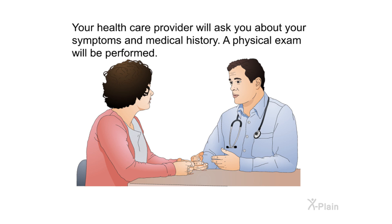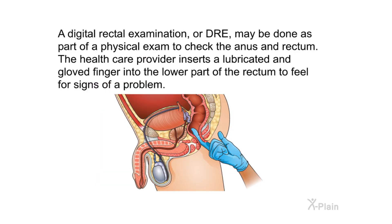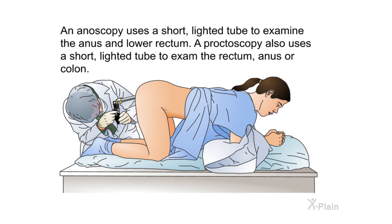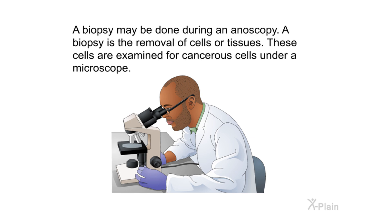Your health care provider will ask you about your symptoms and medical history, and a physical exam will be performed. A digital rectal examination, or DRE, may be done to check the anus and rectum — the provider inserts a lubricated, gloved finger into the lower rectum to feel for signs of a problem. An anoscopy uses a short lighted tube to examine the anus and lower rectum. A biopsy, the removal of cells or tissues for examination under a microscope, may be done during an anoscopy.